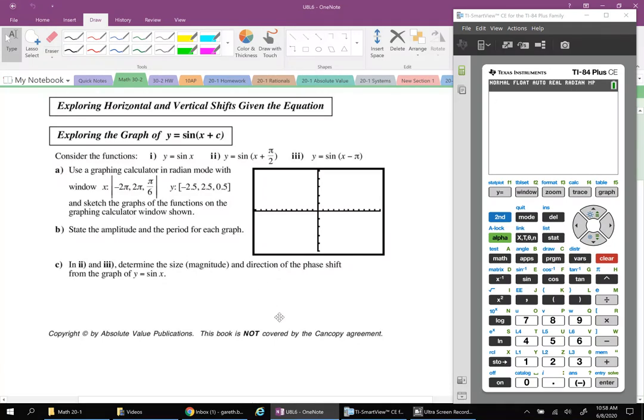Okay, next up is exploring the c value in the graph of y equals sine x plus c. When we go back to that general form y equals a sine bx plus c plus d, it's really important to start identifying the location of these parameters. We're looking at the c value, so that's inside of our sine function and it's what we're adding to our x variable.